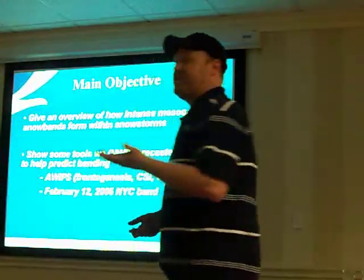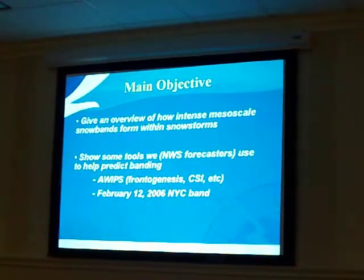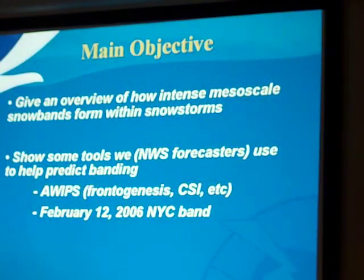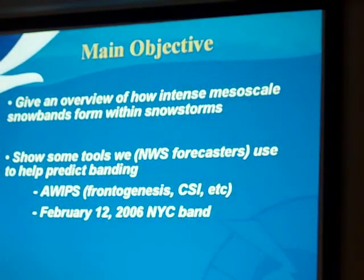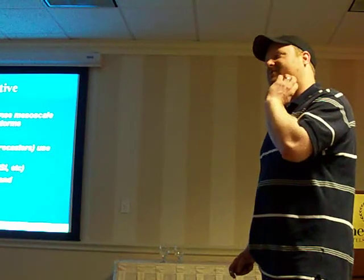What I want to do is give an overview of why this happens and why it's a forecast problem — because you'd be forecasting 6 to 12 inches of snow, and in some cases you get a band form and you end up with 18 to 24 inches in a few hours' time. It's happened in several cases. Especially what I want to focus on is the February 12, 2006 New York City band, because I worked the event when I was working at the Upton office.